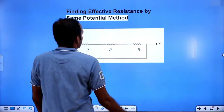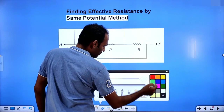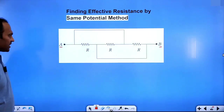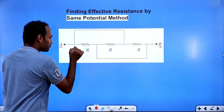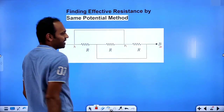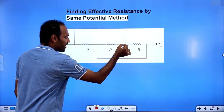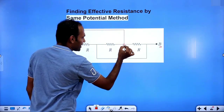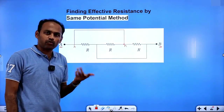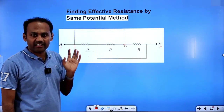Here we have to find out the effective resistance between A and B. Now this is A and this is B. If this point is A, then this will also be A. This point to this point is directly connected by a wire — there is no circuit element present there, no resistor, cell, or inductor. Nothing is connected.